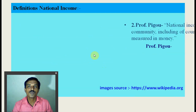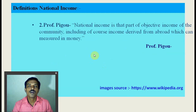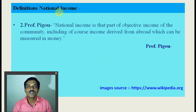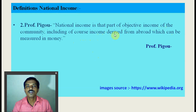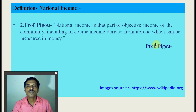The next definition is given by Prof. Pigou. According to Prof. Pigou, national income is that part of the objective income of the community, including the income derived from abroad, which can be measured in money. From Prof. Pigou's point of view, income derived from work in monetary form is included in national income.